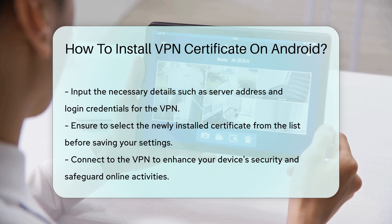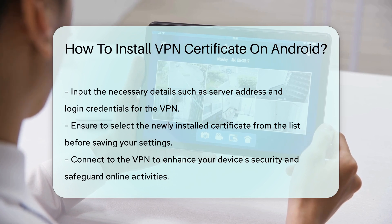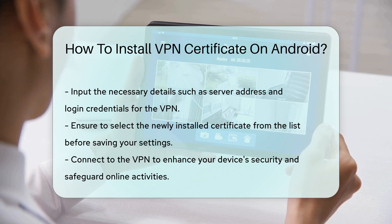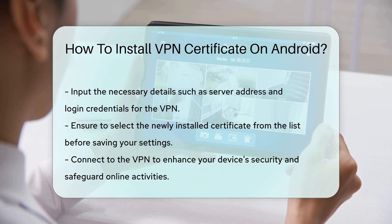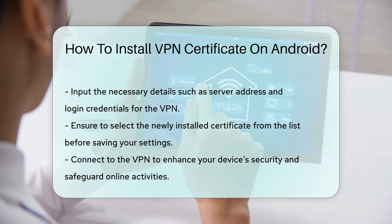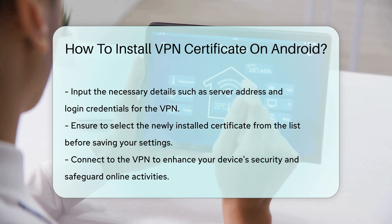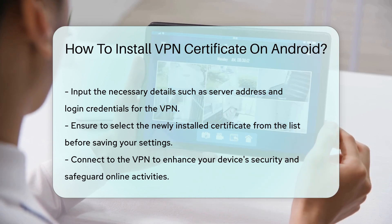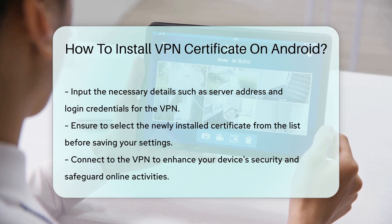Finally, save your settings and connect to the VPN. Your device is now equipped with enhanced security, safeguarding your online activities. By following these steps, you can effectively install a VPN certificate on your Android device, ensuring a more secure browsing experience.